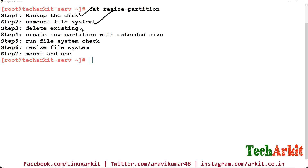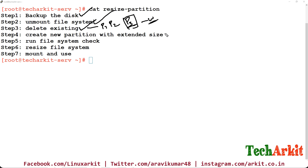Then, using the fdisk utility, delete the existing partition — but remember, you are not deleting partition 1 or 2, you are deleting partition 3, the one you want to extend. Then create a new partition with the extended size: delete the existing partition, save the configuration, go back into fdisk, and create the new partition at 3 GB instead of 2 GB.